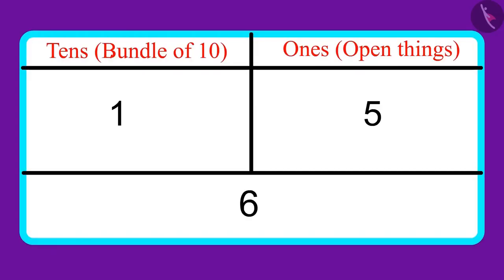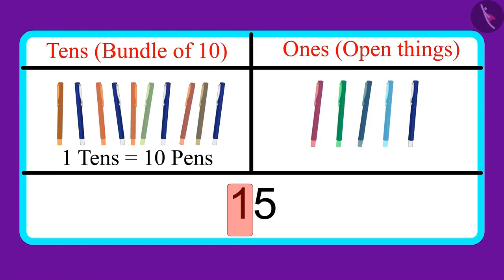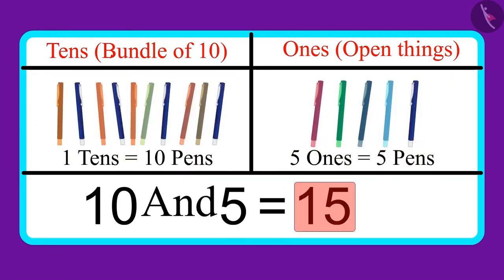No, Aarni, you added one and five, which is wrong. One tens means ten pens, and five ones means five pens. That means I have ten and five, fifteen pens. Did you understand?